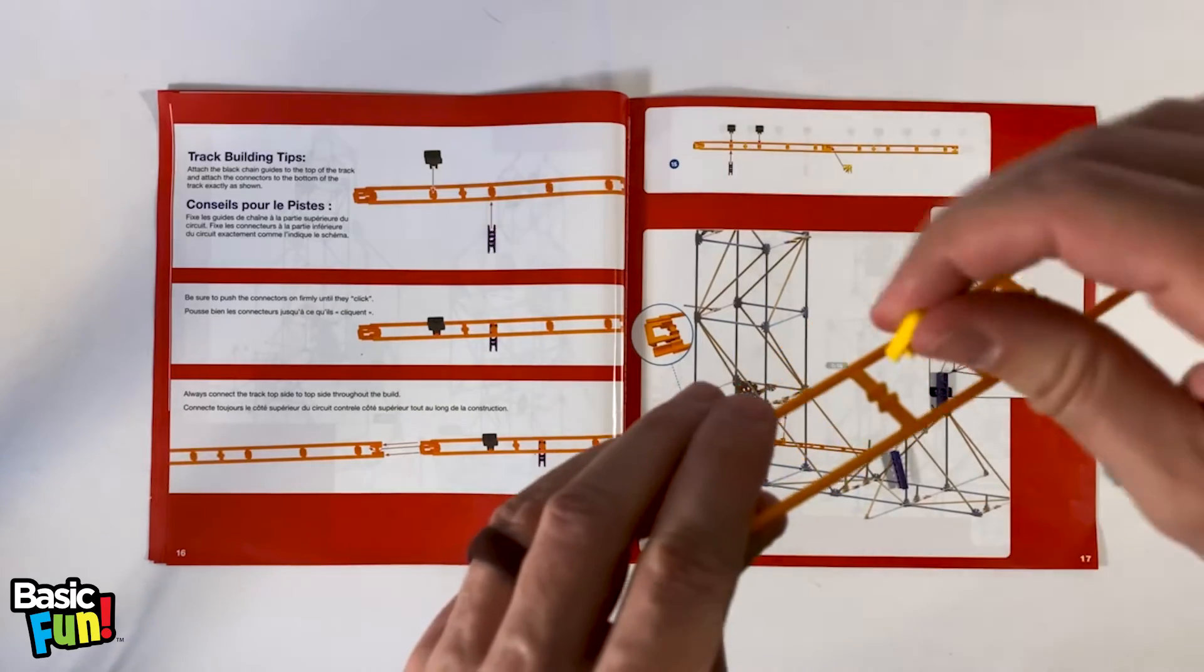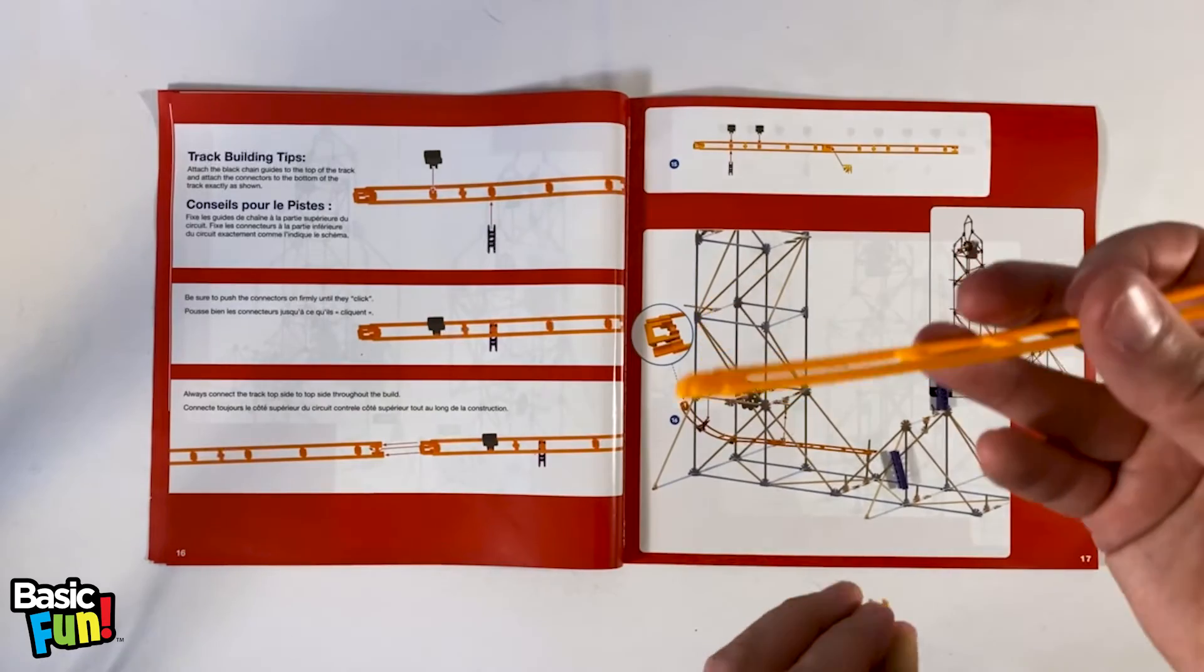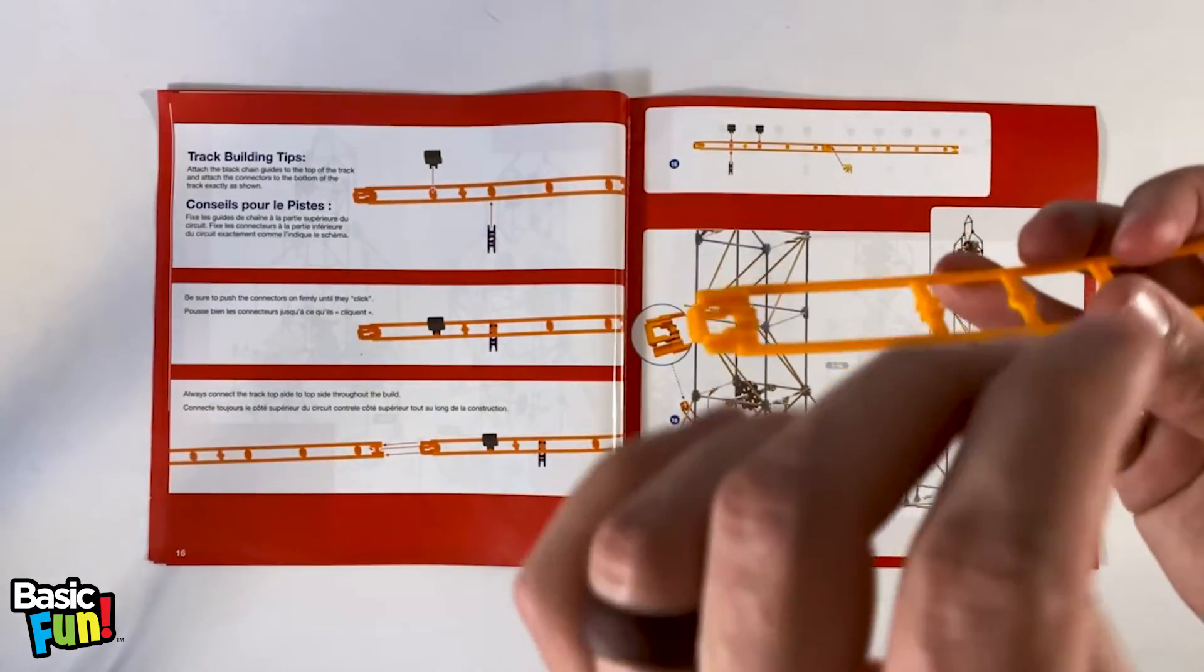But again, if you try to connect from the top of the coaster track, that's going to pop right off. So again, from the bottom or from either sides, never connect the top.